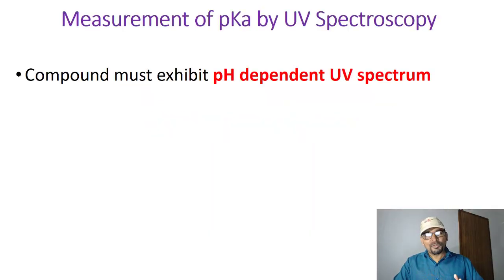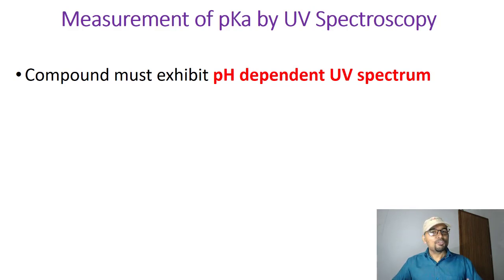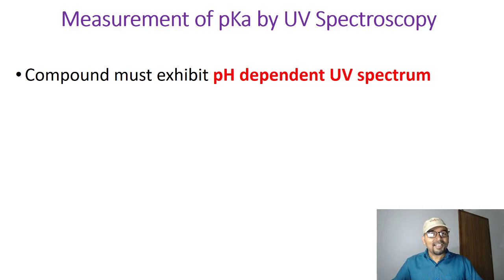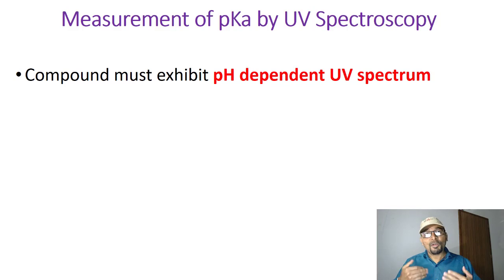As for the possibility of using UV spectroscopy for measurement of the pKa, the prerequisite is that your compound must exhibit a pH-dependent UV spectrum. This indicates that you must get variation in the absorbance value by changing the pH. For example, if at pH 1.0 the absorbance is 0.1 and you change the pH to 5 and get an absorbance of 0.5, that indicates your compound exhibits pH-dependent absorbance and is suitable for pKa measurement by UV spectroscopy.